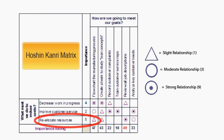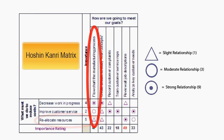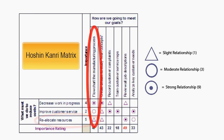The final what is reallocating resources. For the intent of this project, that what or need is considered very important, so it receives 5 as an importance rating. The strength of the relationship between reallocating resources and flow charting the manufacturing process is weak, so the numeric value for this cell is calculated by multiplying 5 times 1. This cell now has the value of 5.